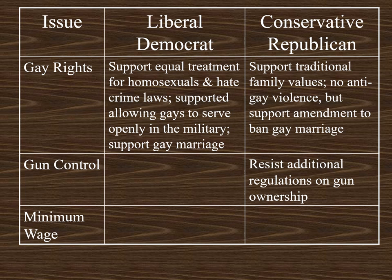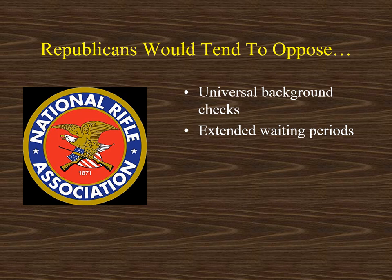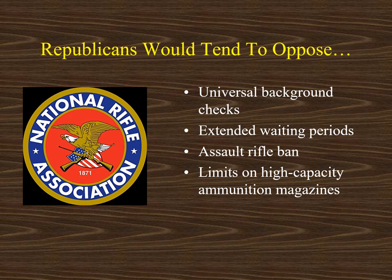When it comes to gun control, conservative Republicans would take the position that they would resist additional regulations on gun ownership — there are enough restrictions in place already. Many Republicans are supported by the National Rifle Association, and many Republicans are uncomfortable with expanded background checks and extended waiting periods. Some people have talked about an assault rifle ban — Republicans would be opposed to that. They would also be uncomfortable with limits placed on high-capacity magazines for firearms.